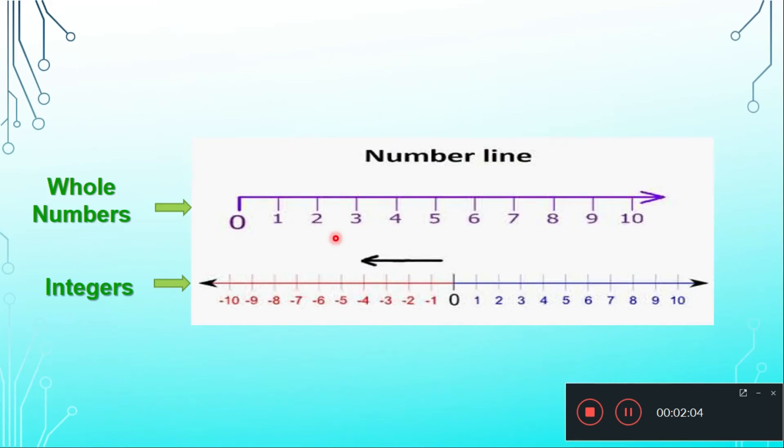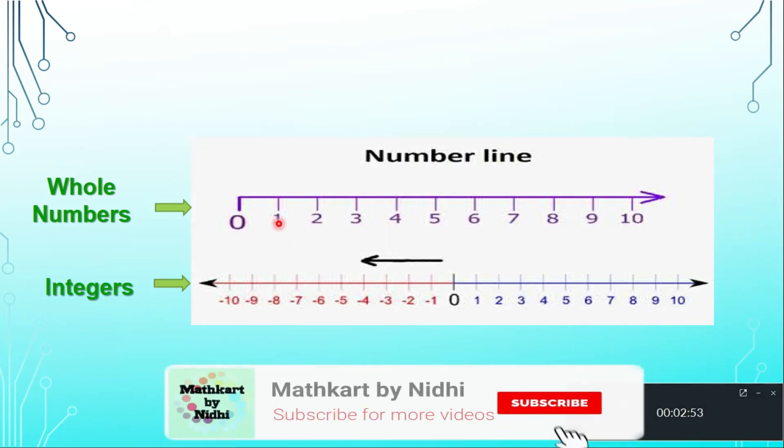Because let us see on the number line of the whole numbers. If I have to represent 1 by 2, so 1 by 2 is something which is more than 0 and less than 1, because it is half. So half will be here somewhere in between of 0 to 1. That's why we are just magnifying this thing, 0 and 1. Magnifying means we are enlarging it.